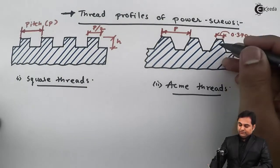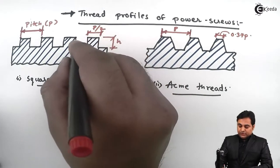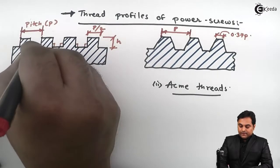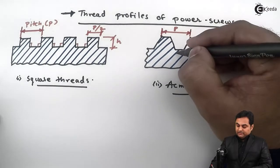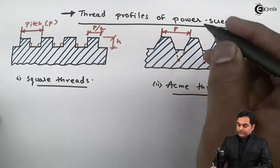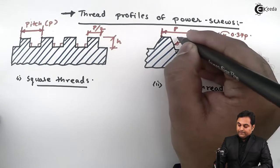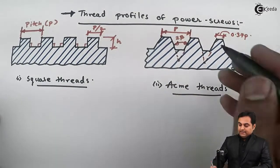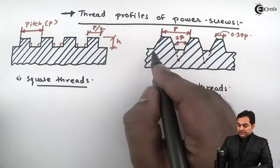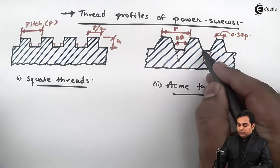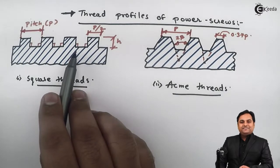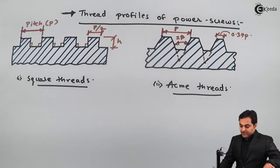Compared to square threads, which are inclined at 90 degrees, acme threads are inclined at some other angle. If I extend the thread flank lines, they meet at an angle called 2 beta — the angle between the thread flanks. As we can see from the diagram, at the bottom of the acme thread the area is more, which offers additional strength compared to square threads.